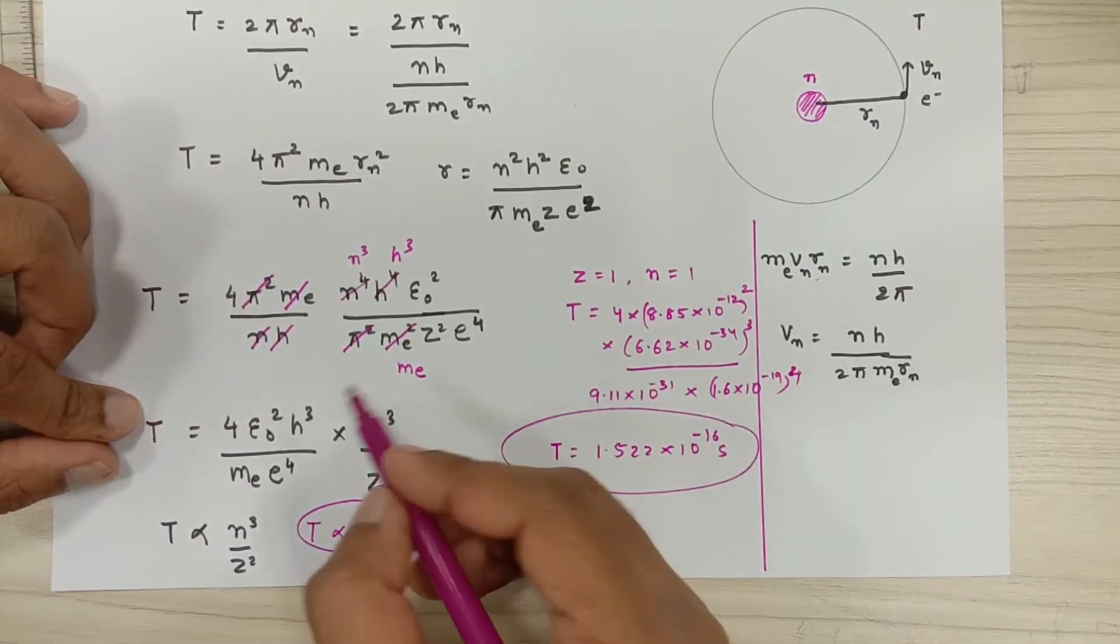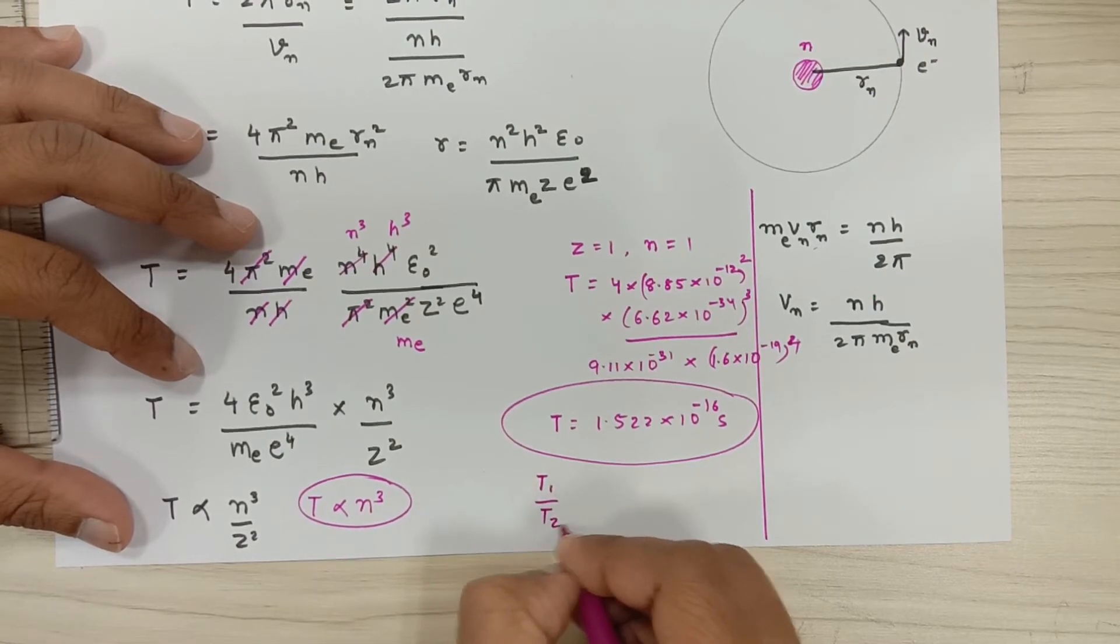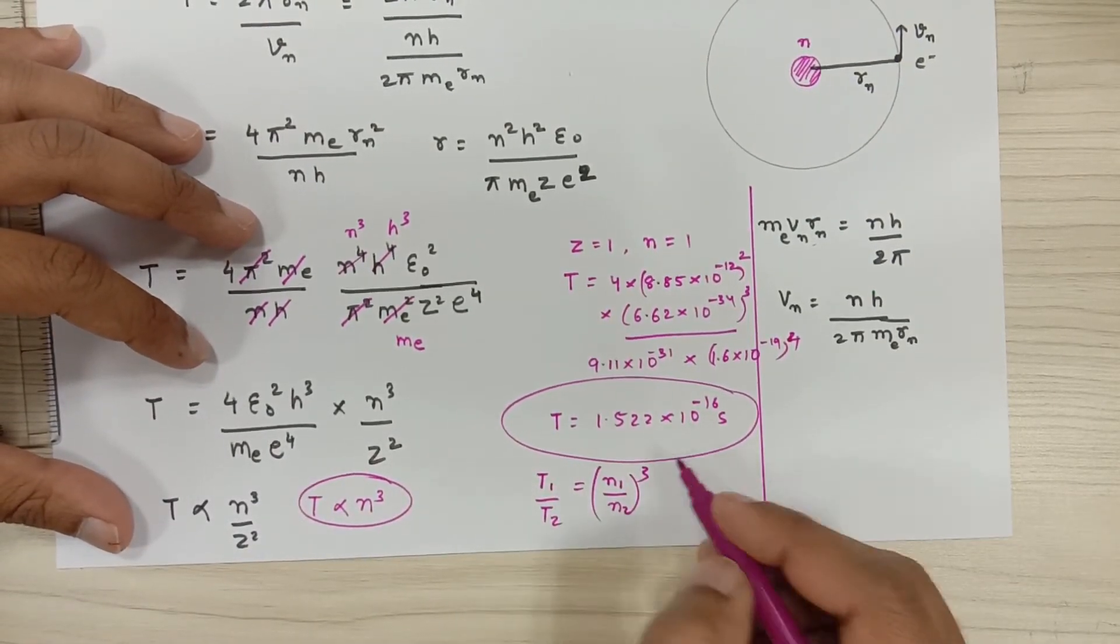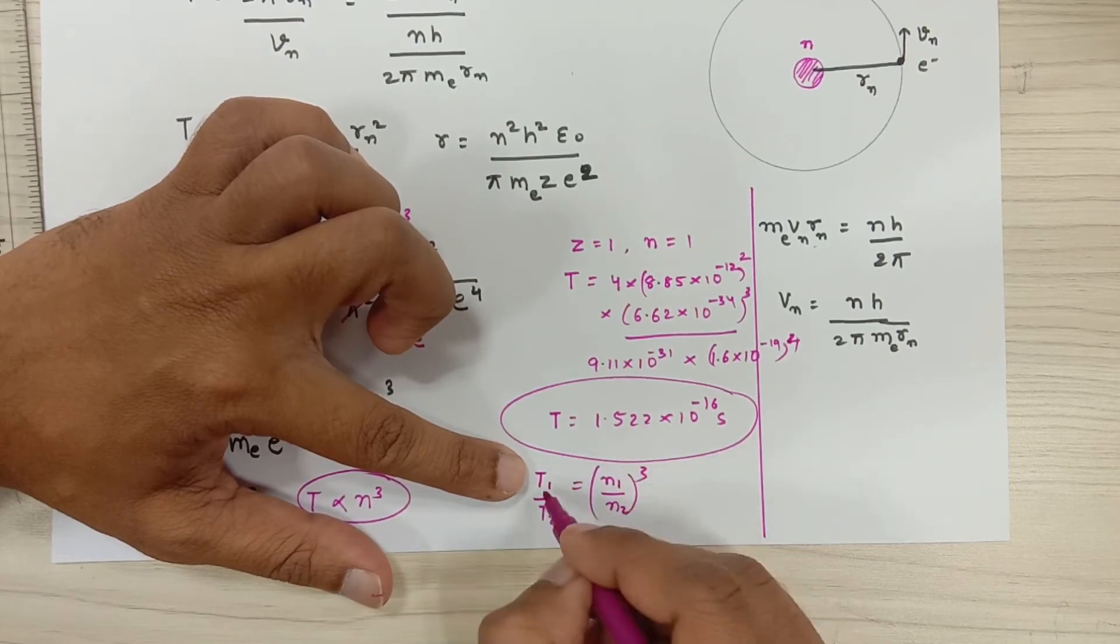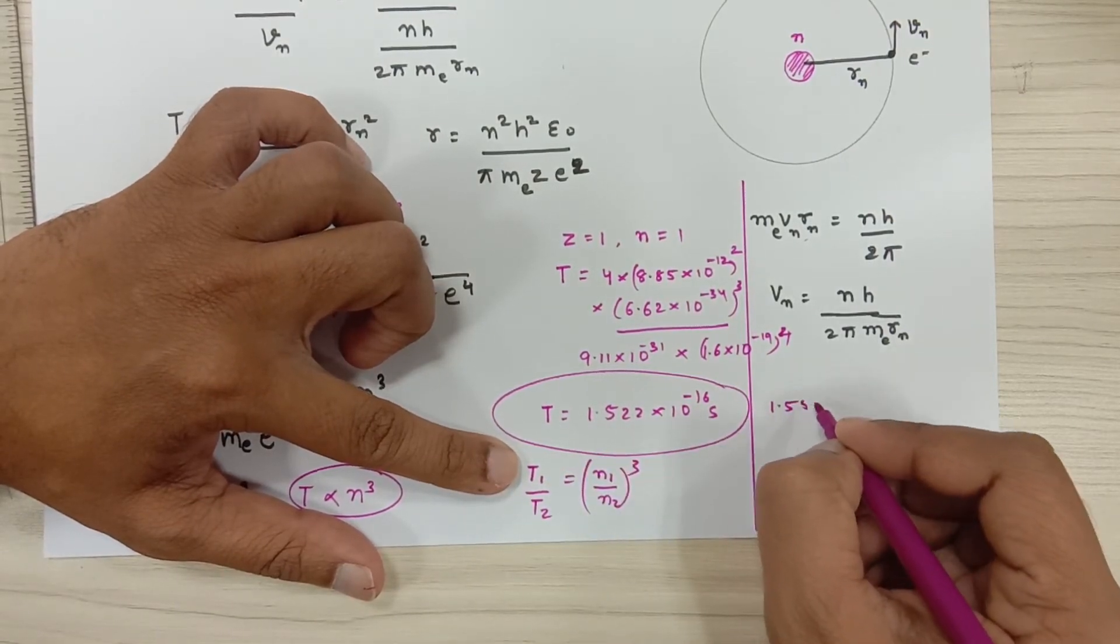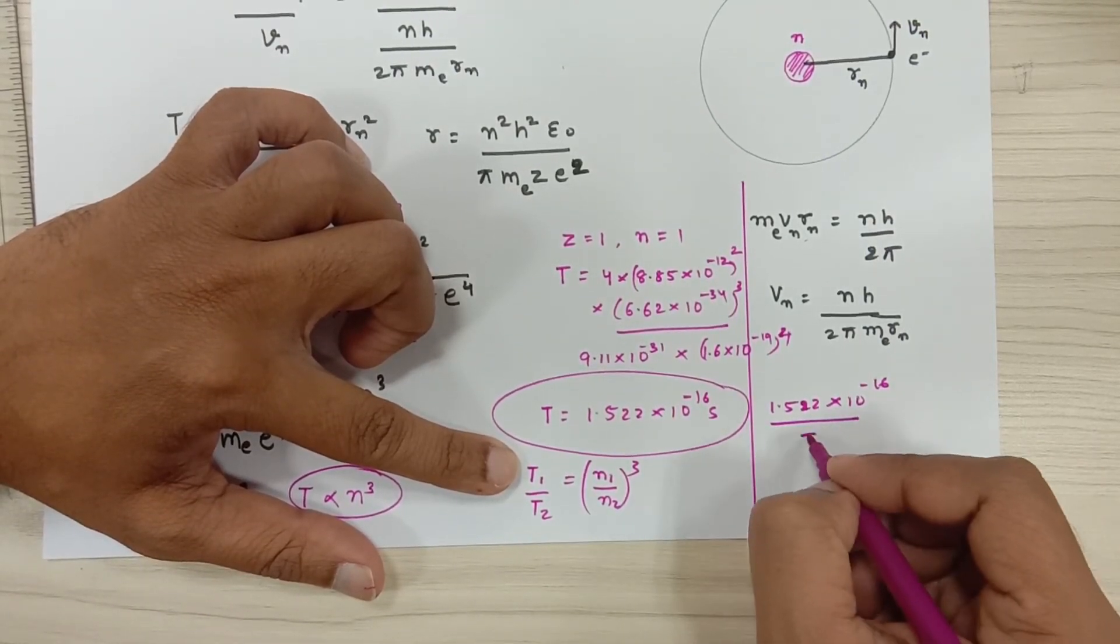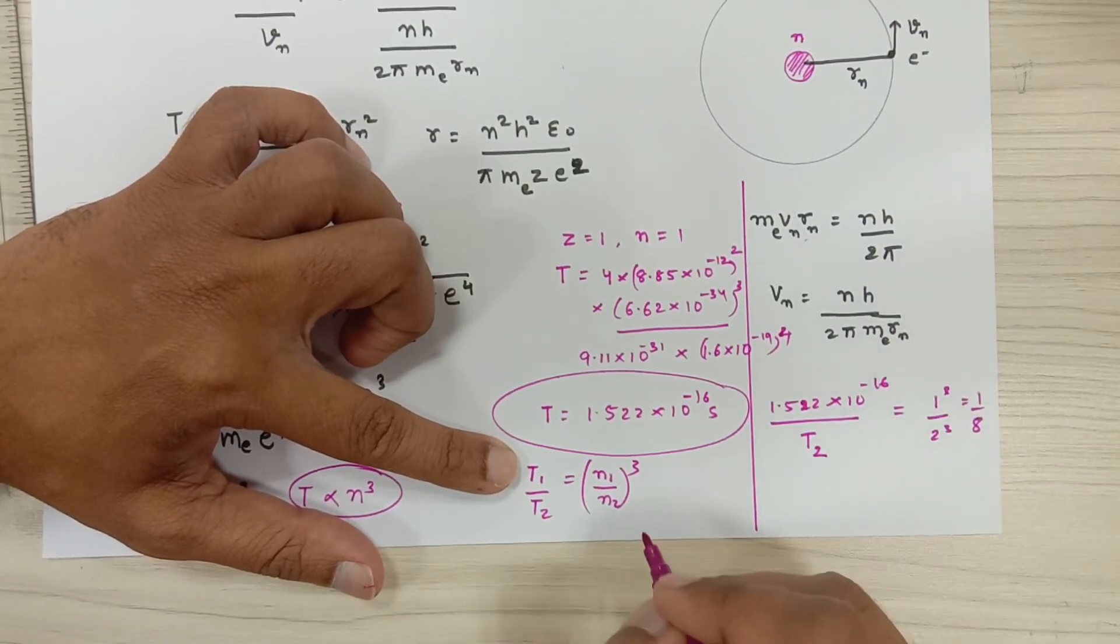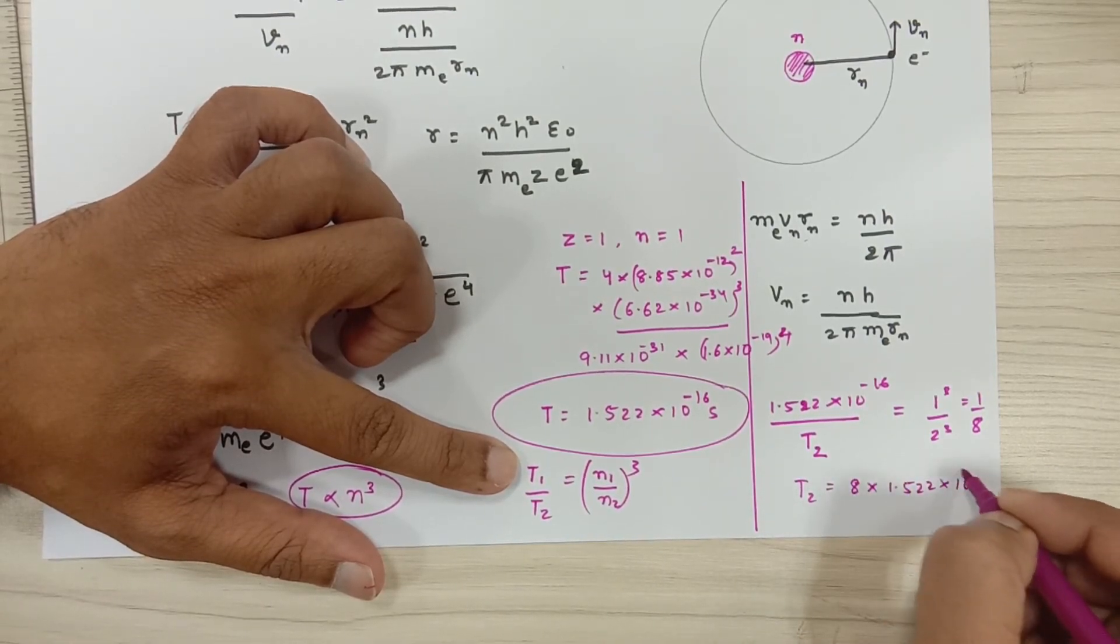Now if you want to find out for the second orbit, we know T is proportional to n³, so you can also use this expression: T₁ upon T₂ will be equal to n₁ upon n₂, the whole cube, because T is proportional to n³. So T₁ upon T₂ would be equal to this. Now you can simply state that if this is 1, then this is the time period. If this is 2, it will be 8. So now T₁ is this time period, so 1.522×10⁻¹⁶ upon time period of an electron in the second orbit, that is 1³, that is 1, upon 2³, so this is basically 1 by 8. So T₂ would be equal to 8 times 1.522×10⁻¹⁶ seconds.